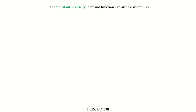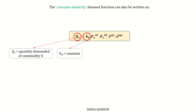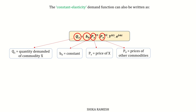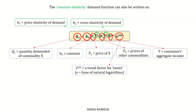The constant elasticity demand function can also be written as qx = b0 · px^b1 · po^b2 · y^b3 · e^(b4t), where qx is the quantity demanded of commodity x, b0 is a constant, px is the price of good x, po is the price of other goods, y is the consumer's aggregate income, and e^(b4t) represents a trend factor for tastes. Here, b1 is the price elasticity of demand, b2 is the cross elasticity of demand, and b3 is the income elasticity of demand.